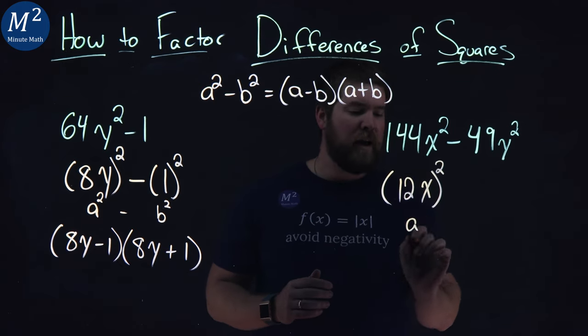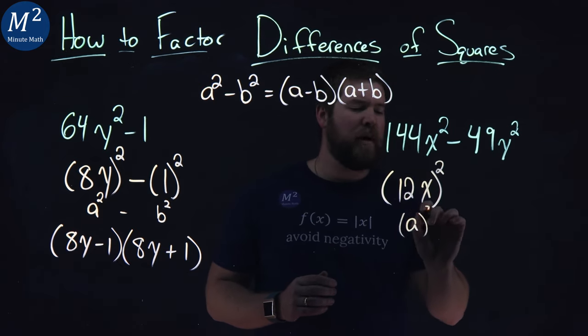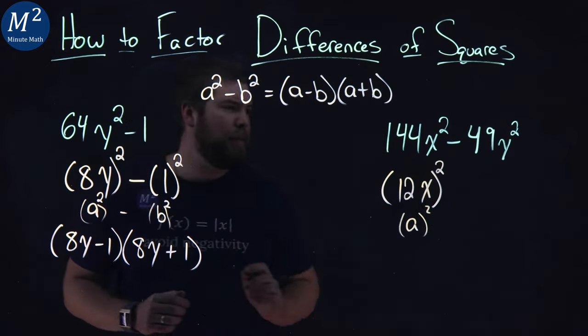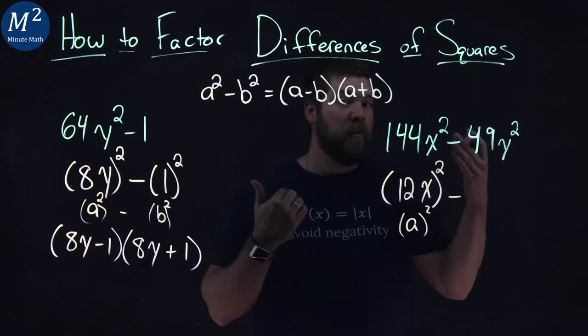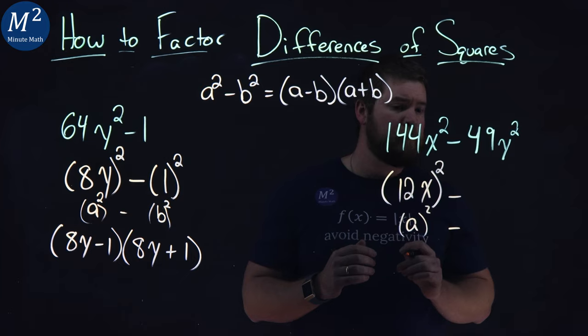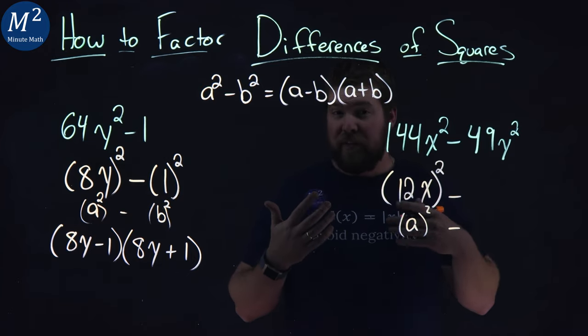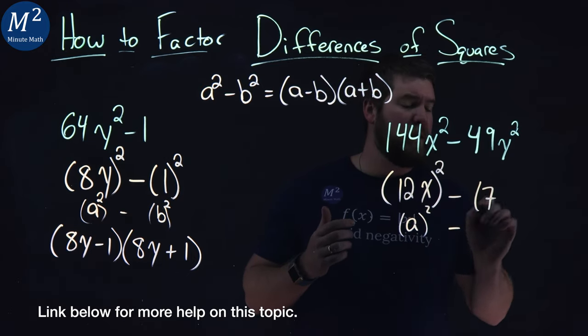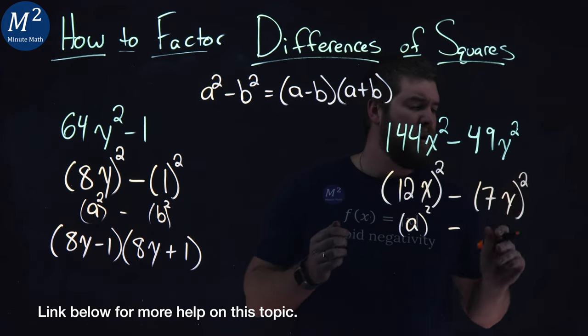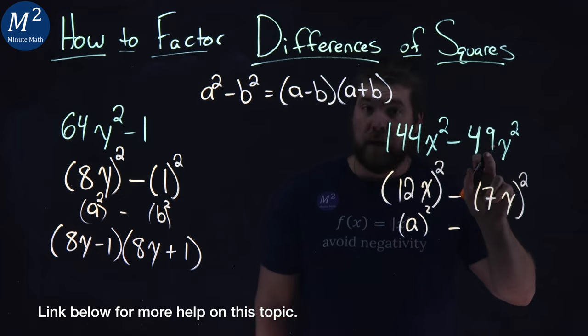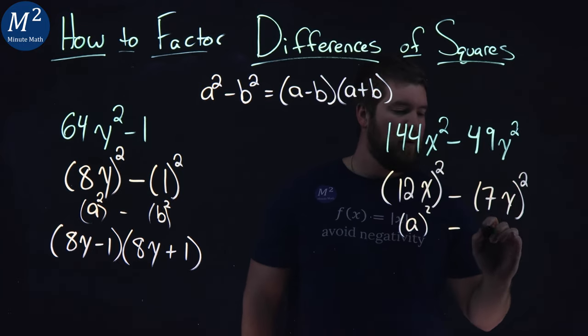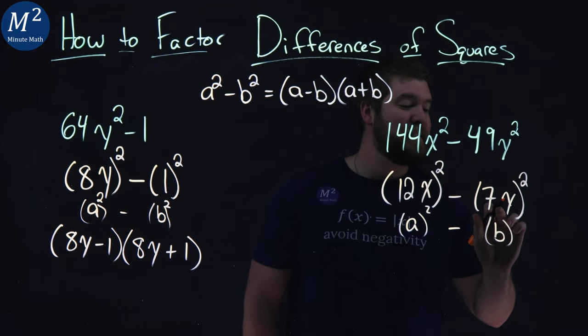So here we have our a value all squared. Put parentheses around, make it a little easier to see. I guess I could have done that here. The second one here, we have 49y squared, the second part. Let's see if we can apply the same thing. 49 is equal to 7 squared. So put a 7 right here. And then y squared is equal to y squared. So 7 squared is our 49, and y squared is y squared. And so our b value is 7y.